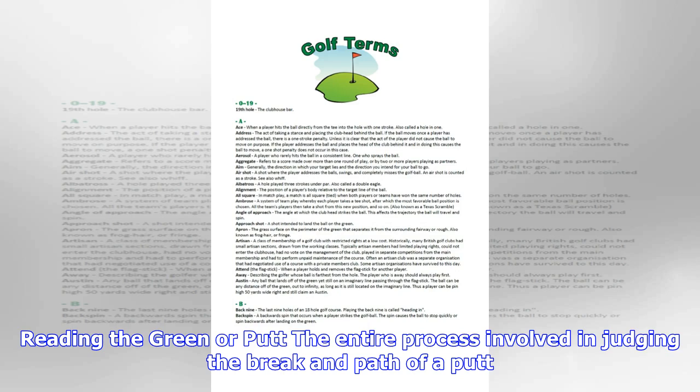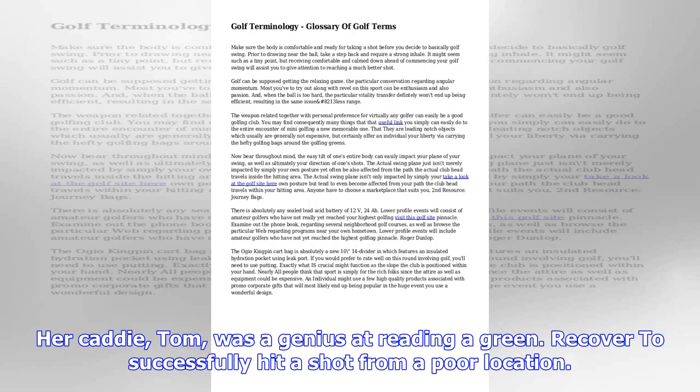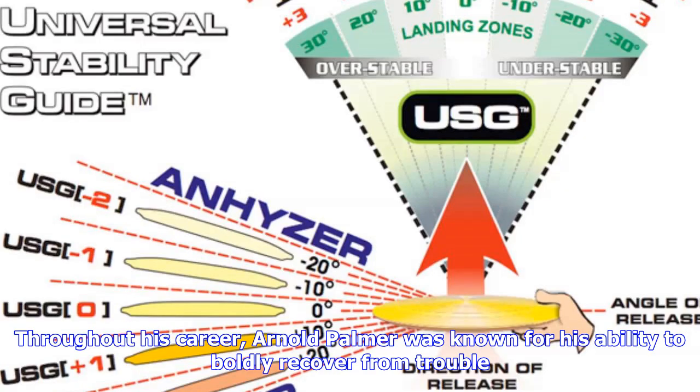Open to close: a description of the movement of the club face when a player fans it open on the backswing and then closes it at impact. When his timing was correct, his open to close swing produced wonderful shots.